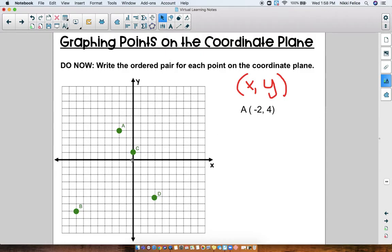Point B is, we count all the way to the left out here at negative 8 and down to negative 7. So point B is at negative 8, negative 7.